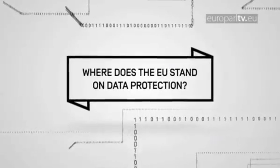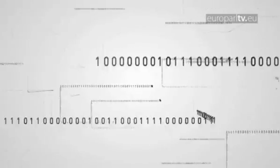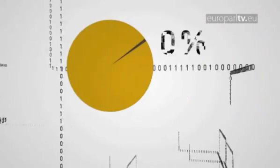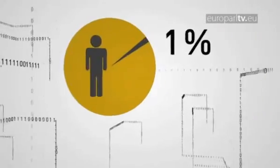Where does the EU stand on data protection? Data protection laws in the EU date back to 1995, when less than 1% of the EU population used the Internet.